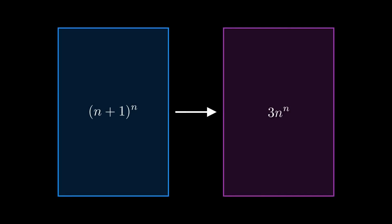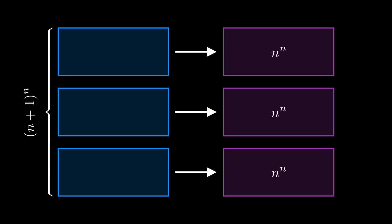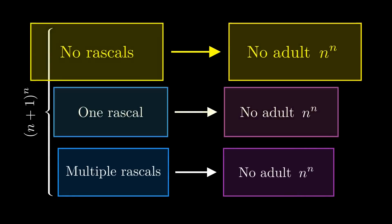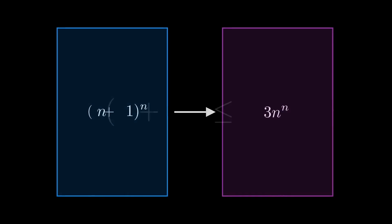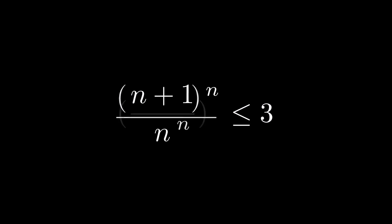Let's recap. We partitioned the (n+1)^n set into three parts and showed that each was injectable into the set of size n^n. That means that each subset on the left is smaller than or equal to n^n. We've now proven that the sequence is bounded above by 3.